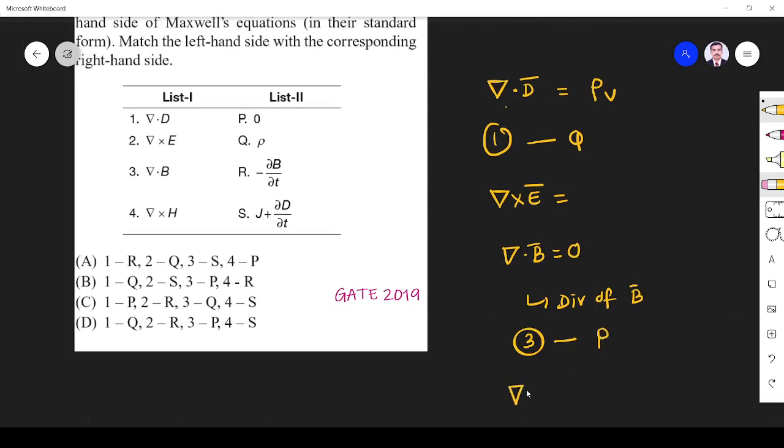∇×H, that is Ampere circular law, so it is Maxwell's equation. Maxwell's equation means ∇×E is equal to -∂B/∂t, this is called Faraday's law. So ∇×H is Ampere-Maxwell equation, that is Jc plus ∂D/∂t, so 4 is S.